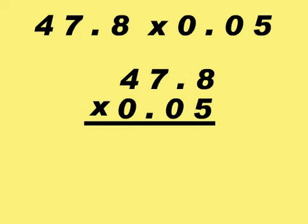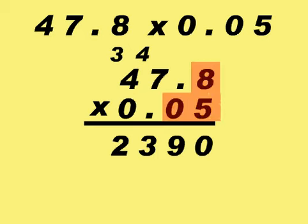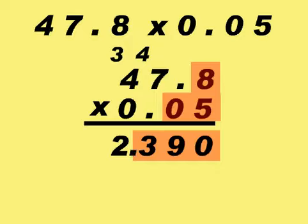When we multiply decimals, we add up the decimal places of the decimals we have multiplied, then apply it to the product found.